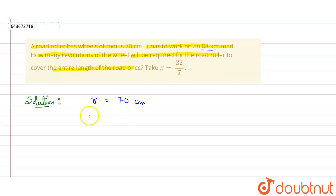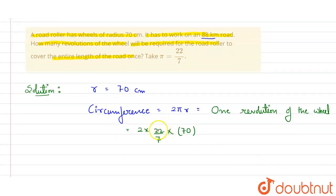So first we will find the circumference of circle. We know circumference is equal to 2πr, and circumference equals one revolution of the wheel. Here it will be equal to 2π, we have to take 22 upon 7, and r here is 70.